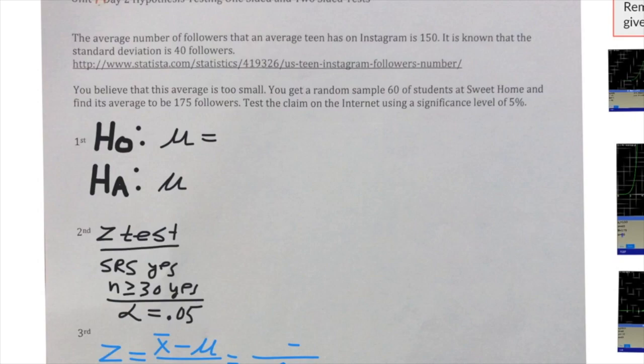In this question it says that the average teen has 150 followers. Whenever you're given an average, ask yourself: is that coming from the population or sample? This one is coming from the population. It's known that the standard deviation is 40 followers. Again, ask yourself if that standard deviation is coming from the population or from a sample—it's coming from the population as well.